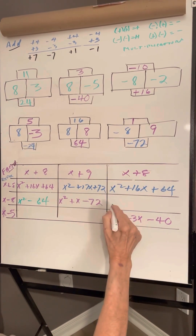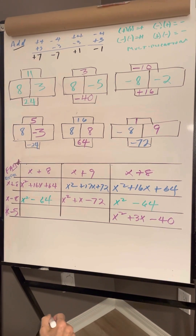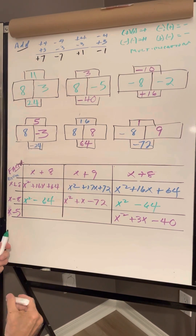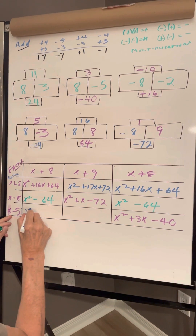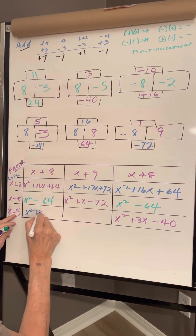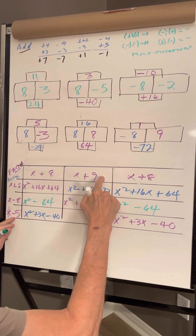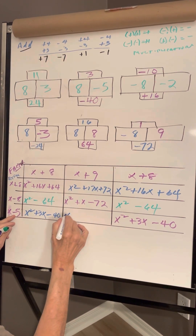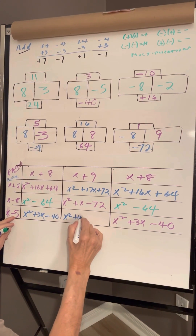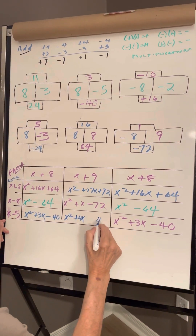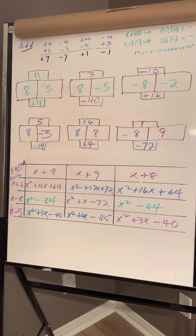This is the same question: x squared minus 64. This one down here, it's going to be x times x is x squared. 8 minus 5 is going to be plus 3x. And 8 times 5 is 40. C1 negative, keep it. This one over here, x times x is x squared. And 9 minus 5 is going to be 4x. 9 times 5 is 45. C1 negative, keep it. I hope you're catching on to your times table.